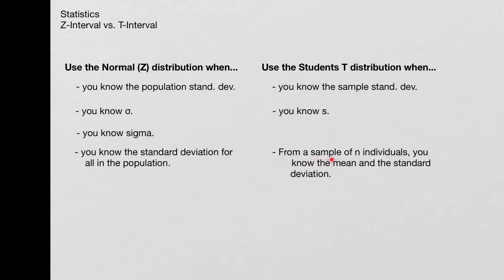And if it says something like, from a sample of n individuals, you know the mean is this and the standard deviation is this. Now this is the most common one that people have trouble with, because they see the word standard deviation and they say, oh, it doesn't say population or sample right there in front of it. So I guess it must be sigma, because that seems more standard deviation-ish than s.